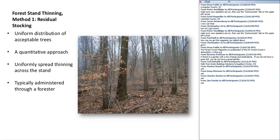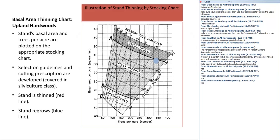So let's talk about thinning. Our goal is to improve the quality and growth of the trees we leave behind. Method one is called residual stocking. In this effort we're working in stands that have a fairly uniform distribution of high-quality stems. It tends to be a more quantitative approach, because the residual stocking is based on numeric inventory data that your forester will collect, and the thinning is going to be spread uniformly across the stand because we have uniform spatial arrangement of desirable stems.